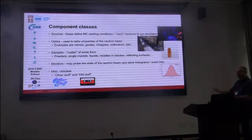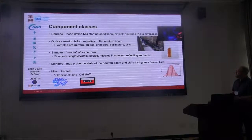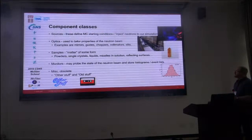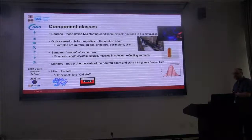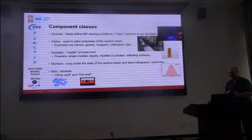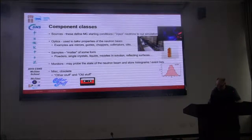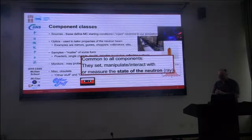The component classes: sources define the Monte Carlo starting conditions of the neutrons and inject neutrons for simulation; optics are used to tailor the properties of the neutron beam as we go along — mirrors, choppers, slits; samples are matter in some shape or form, such as a crystal; monitors probe the state of the neutron beam and output histograms or event lists; and then there are some miscellaneous or obsolete components. Common to all components is that they either set, manipulate, interact with, or measure the neutron state.